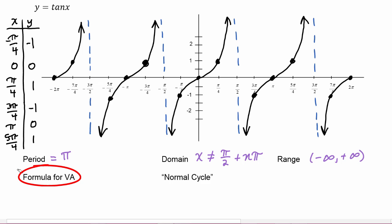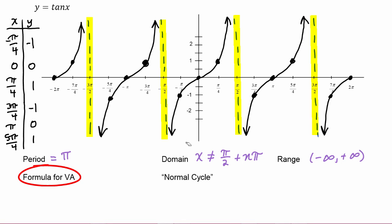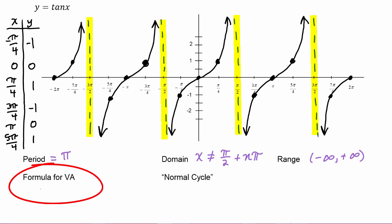The formula for the vertical asymptotes is straightforward: wherever the domain of the function cannot be, that's exactly where the vertical asymptotes are. We have a vertical asymptote at pi over two, and then the distance to the other vertical asymptotes is just integer multiples of pi. So the formula for the vertical asymptotes is x equals pi over two plus n times pi.